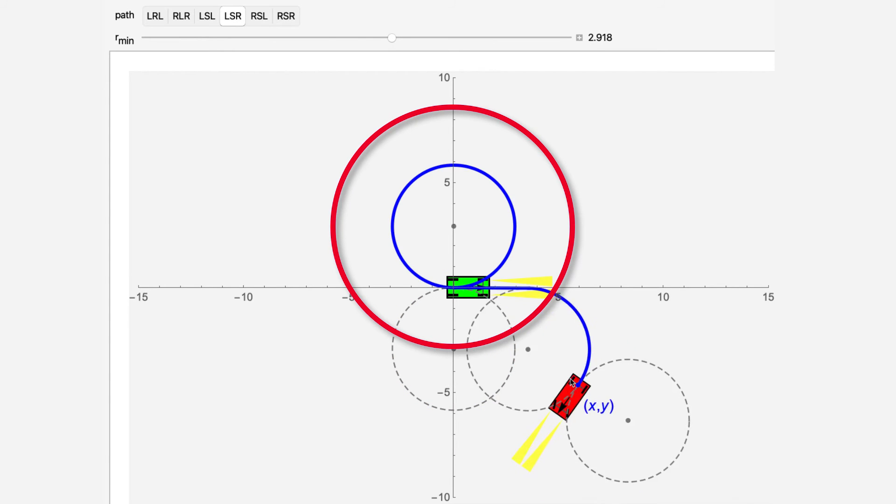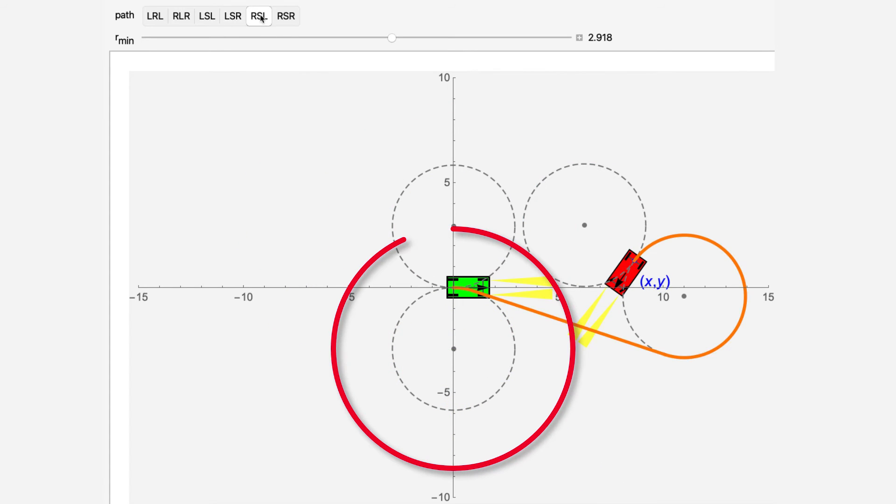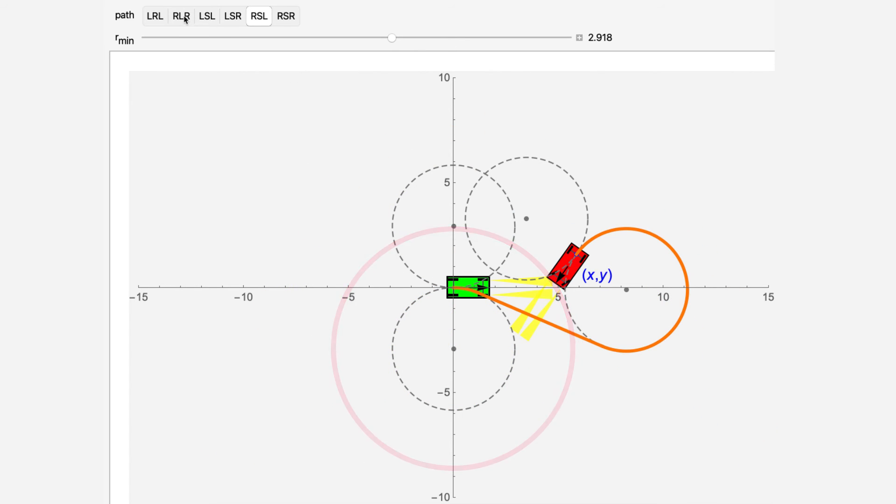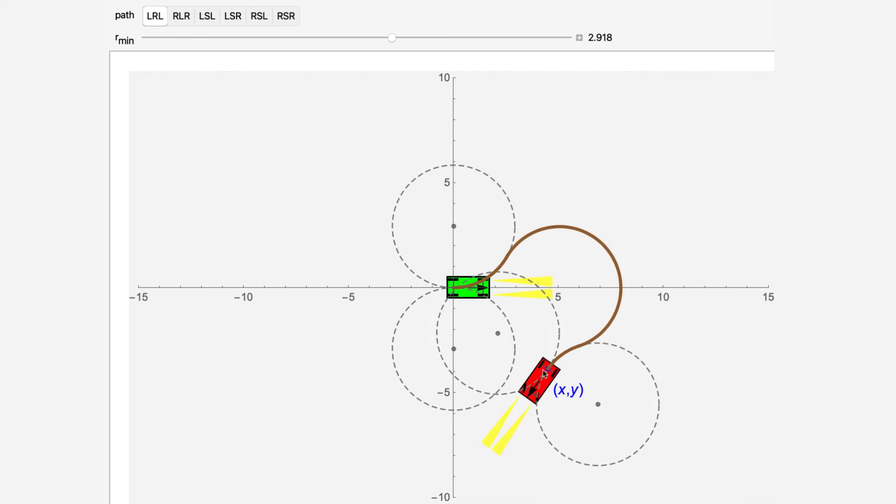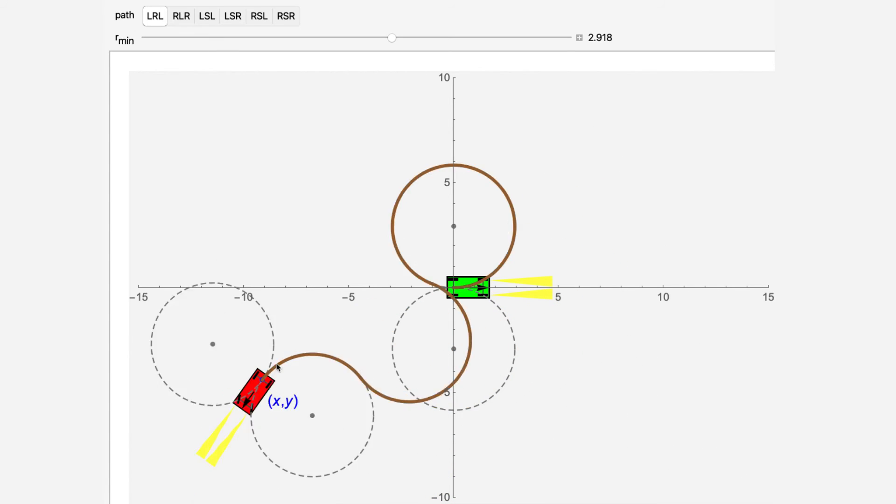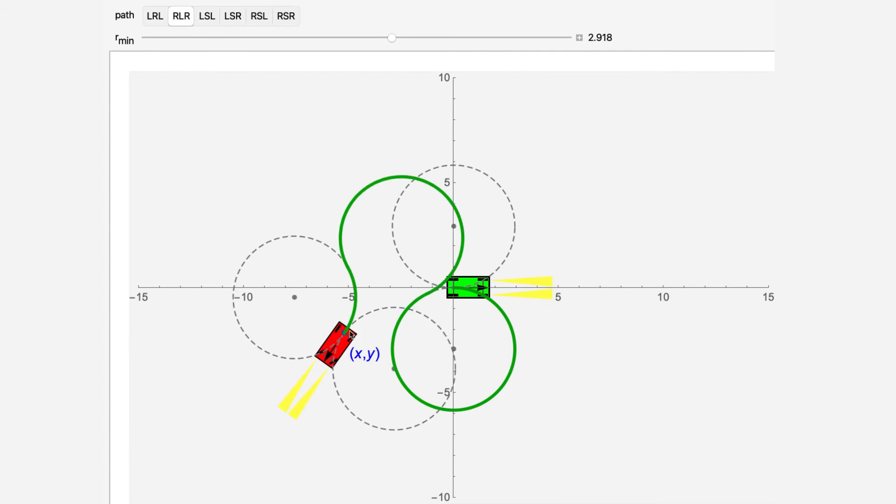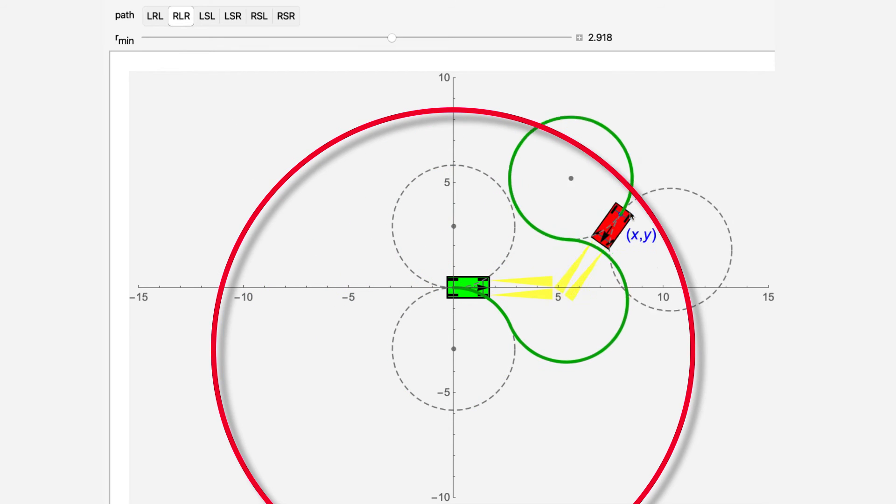LSR blue and RSL orange are potentially valid only if the distance from start to goal is greater than 2 times R-min. The two paths composed entirely of curves, LRL brown, and RLR dark green are potentially valid only if the distance from start to goal is less than 4 times R-min.